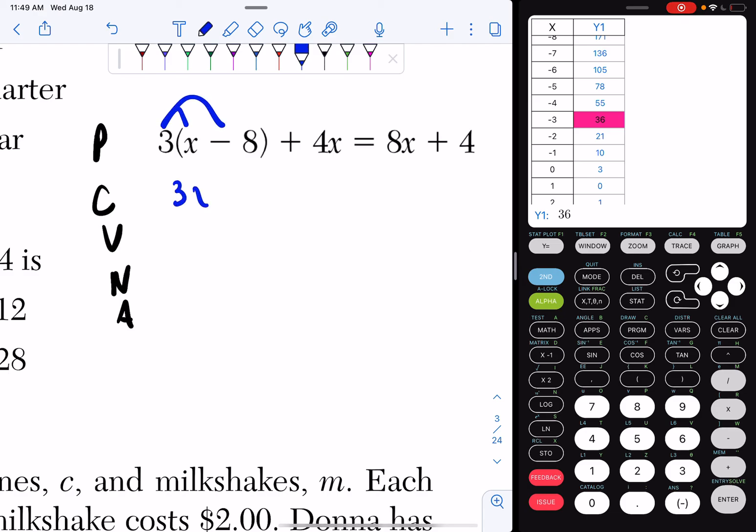So I have 3 times x, which is 3x. 3 times a negative 8 is minus 24 plus 4x equals 8x plus 4.